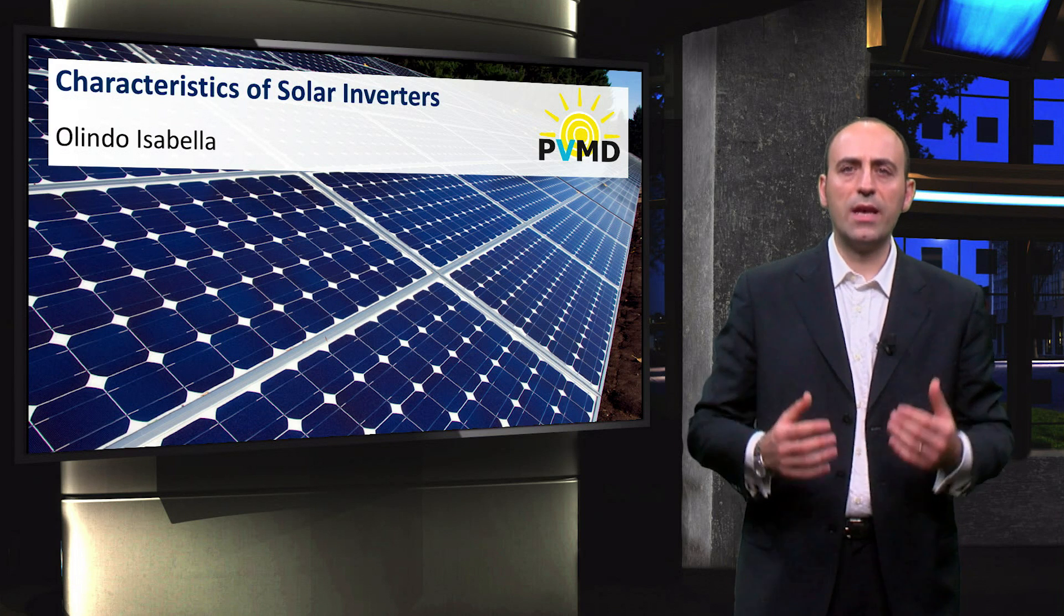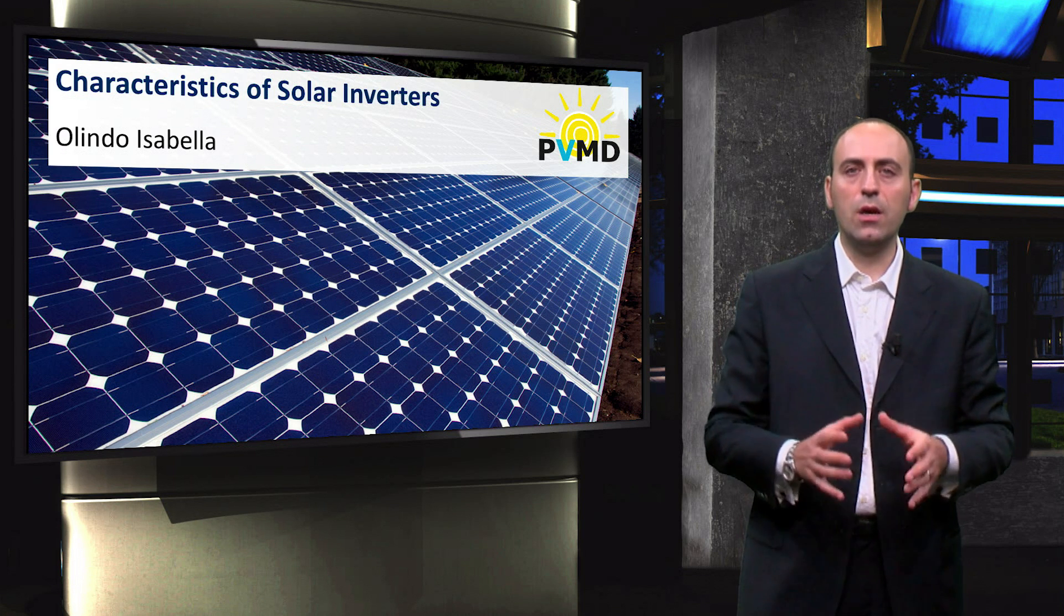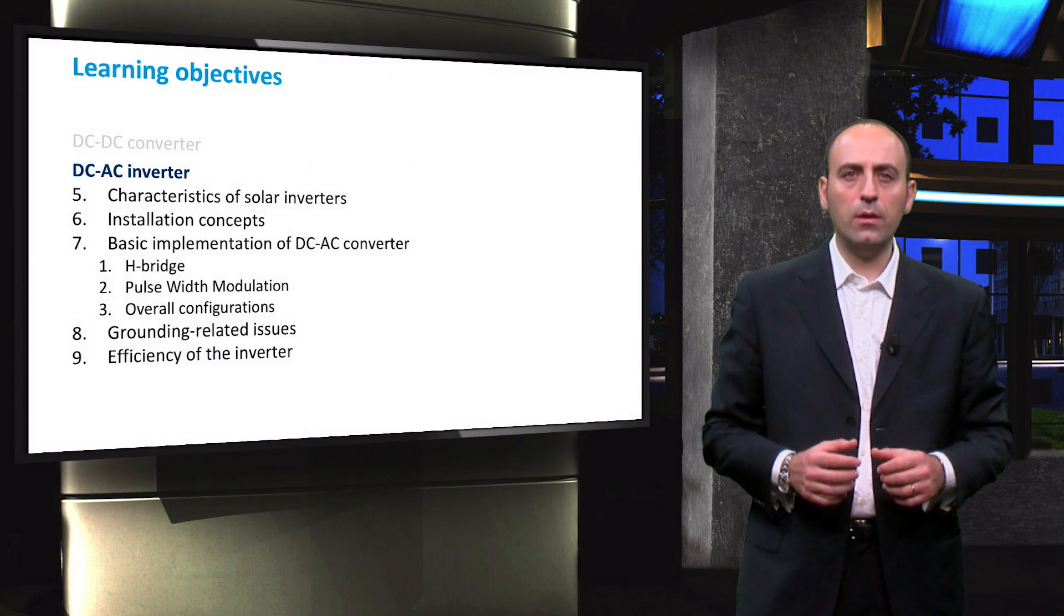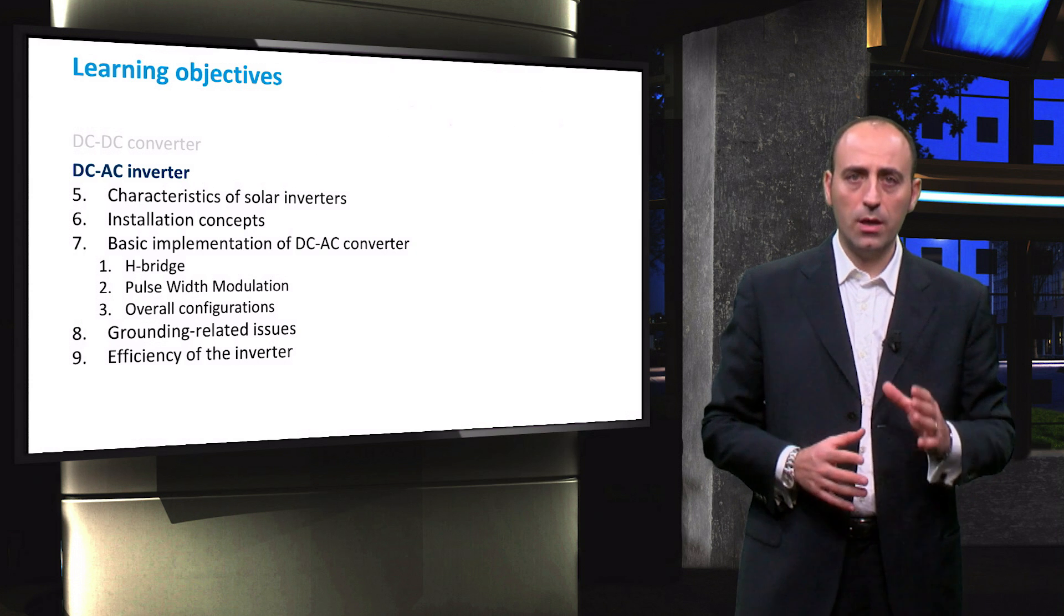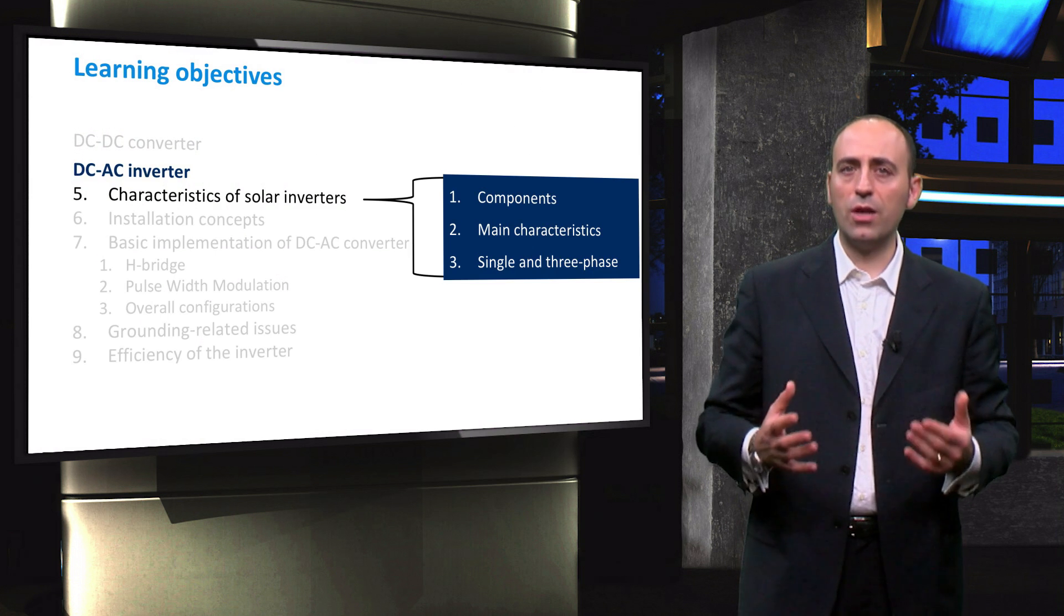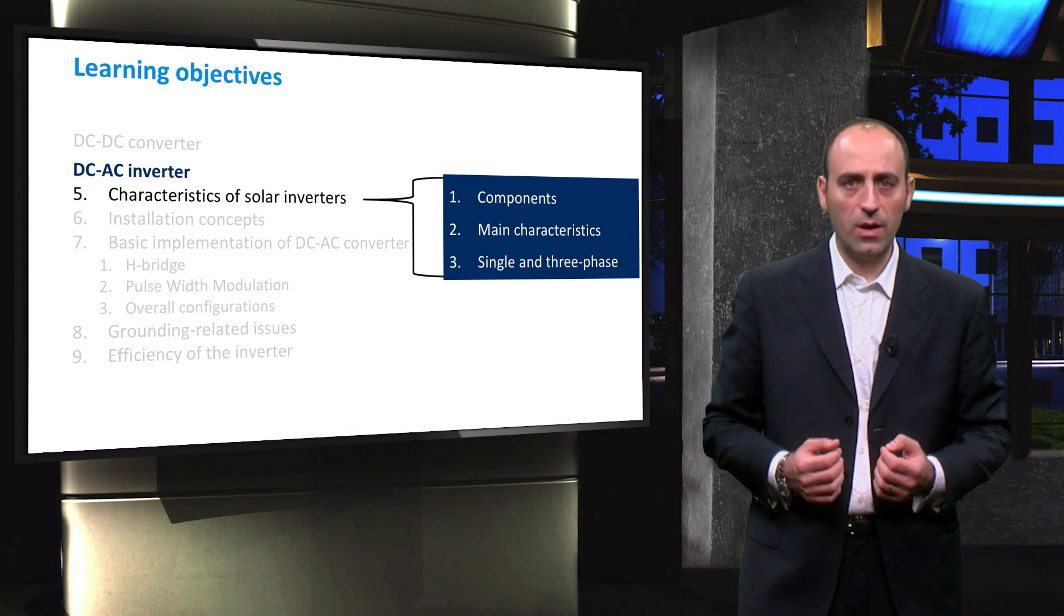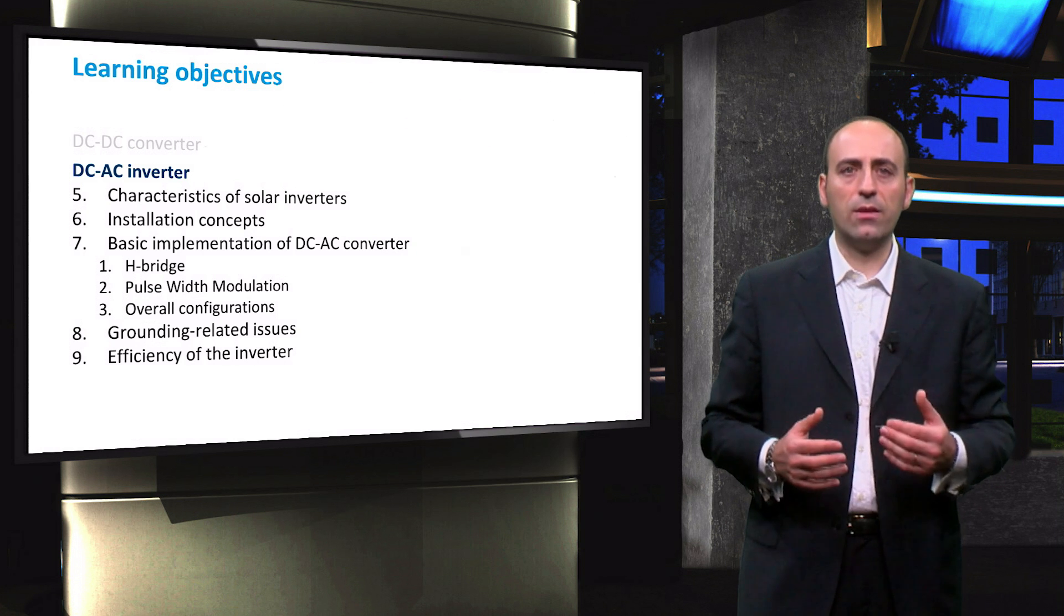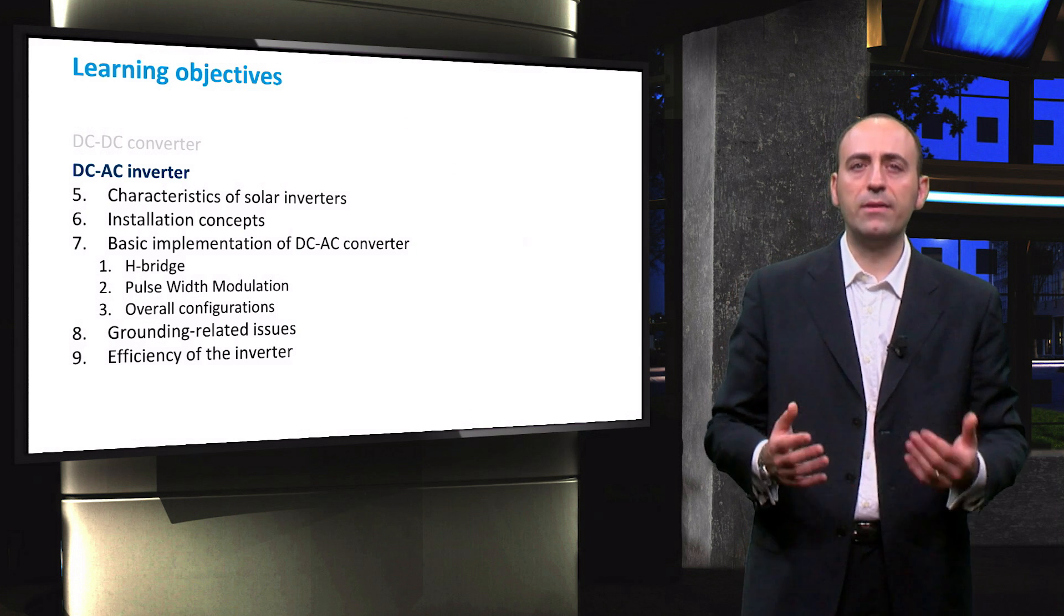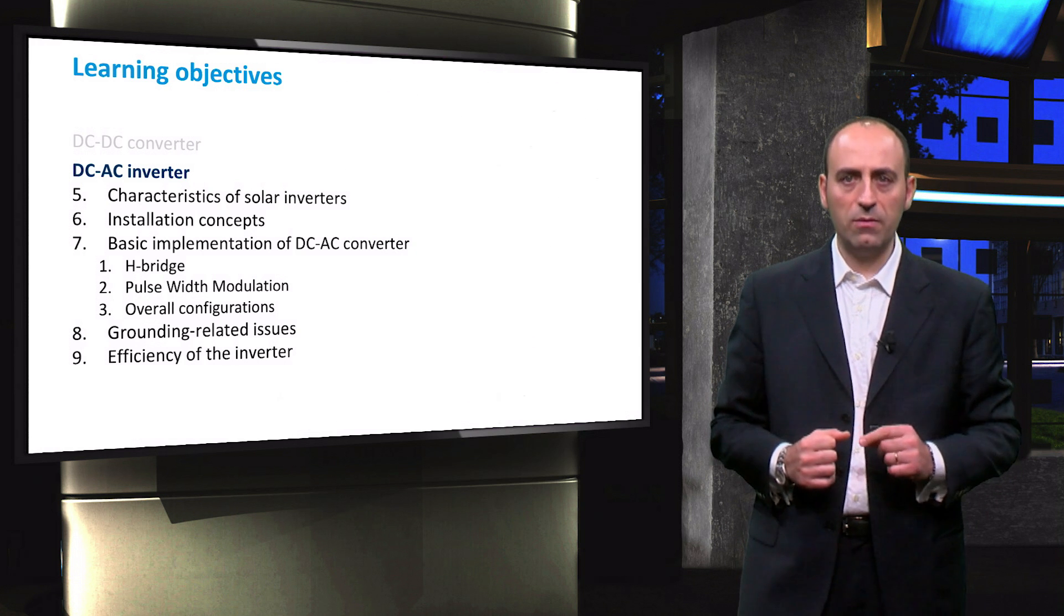In this video, we start the second part of the electrical conversion chapter that is about DC to AC inverters. This second half is subdivided as follows. In this video, after an introduction on solar inverters, we will see the main characteristics of this device.